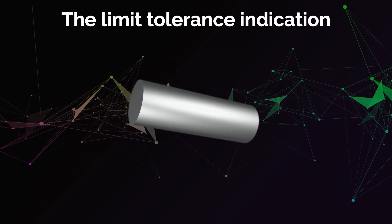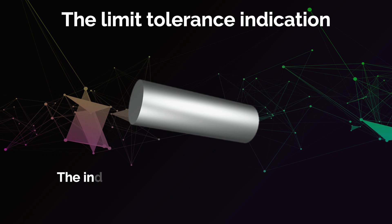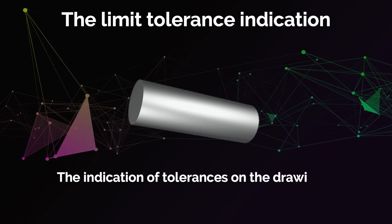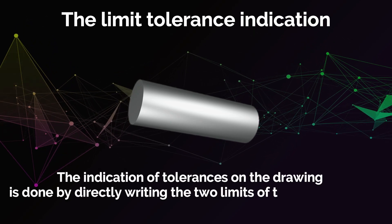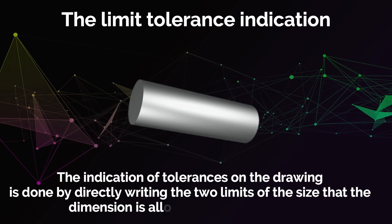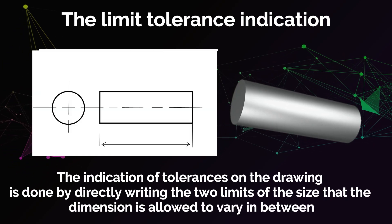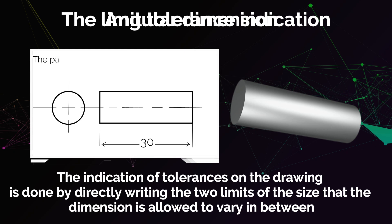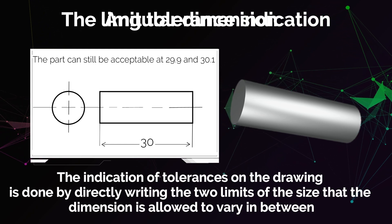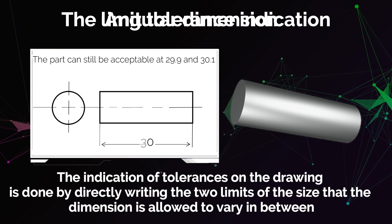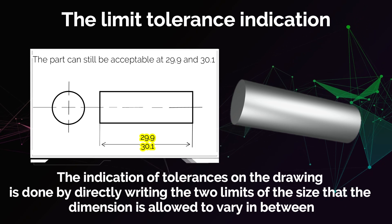Another tolerance indication method is the limit tolerance indication. In this method, the indication of tolerances on the drawing is done by directly writing the two limits of the size that the dimension is allowed to vary between. For example, if the nominal dimension is 30 and the part can still be acceptable at 29.9 and 30.1, then you would replace the drawing entry 30 with the limits 29.9 and 30.1.